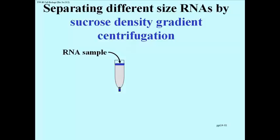You can make a gradient in which the bottom of the tube has high concentrations of sucrose, and then gradually, as you look further and further to the top of the tube, there's less and less sucrose concentration.